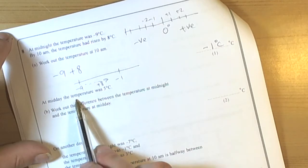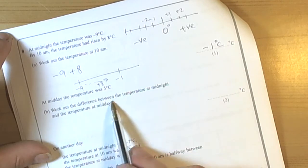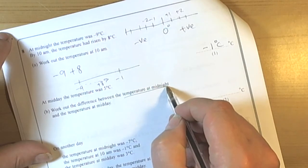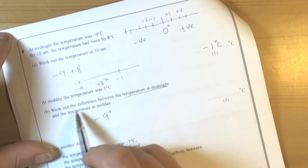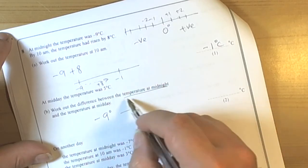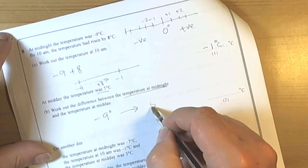And then it says at midday the temperature was 5 degrees. So work out the difference between the temperature at midnight. So again highlighting key information. So the temperature at midnight was minus 9 and the temperature at midday. So we're going from minus 9 to midday temperature which was 5 degrees C.